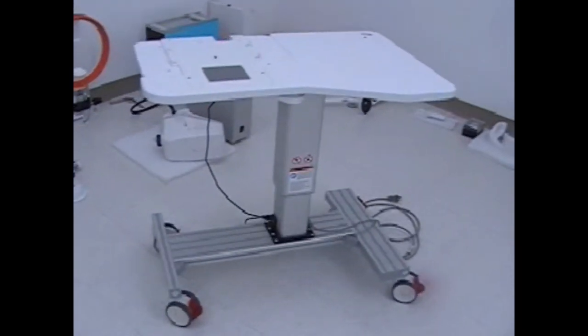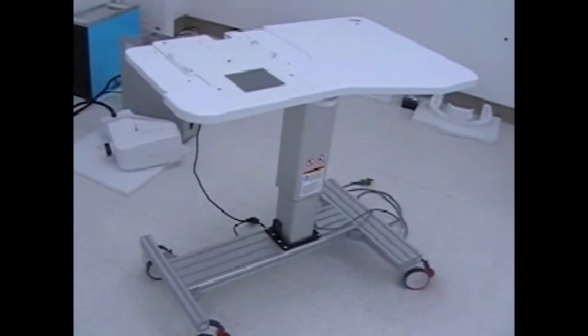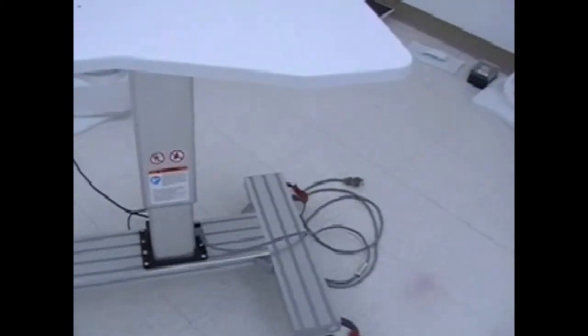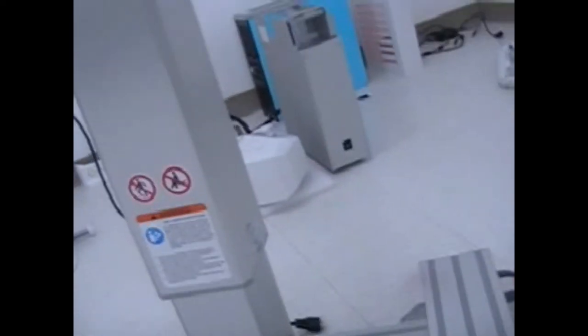The table has four locking wheels. Below are the hanging hooks for the controller and the computer. Computer to the right, controller to the inside.